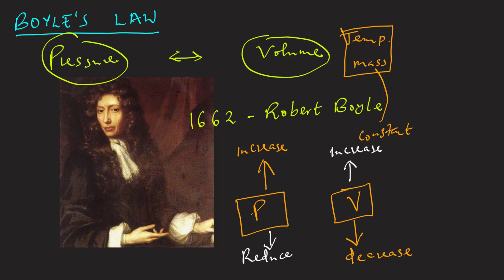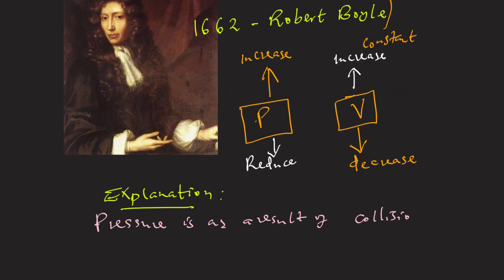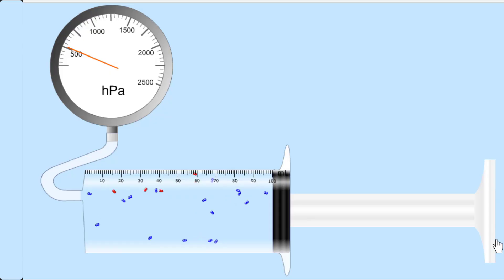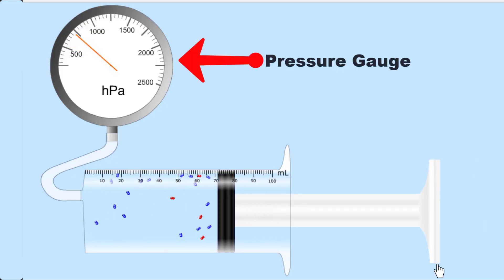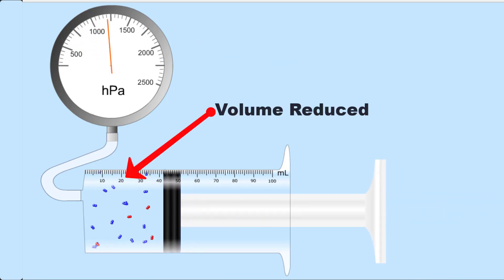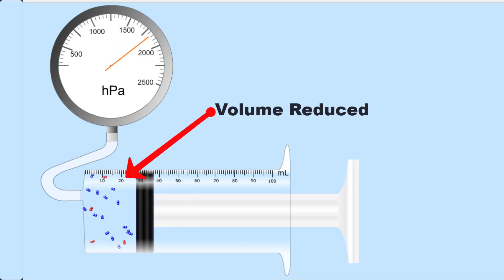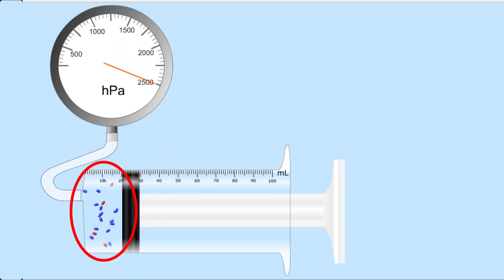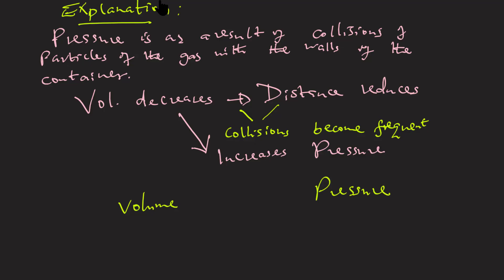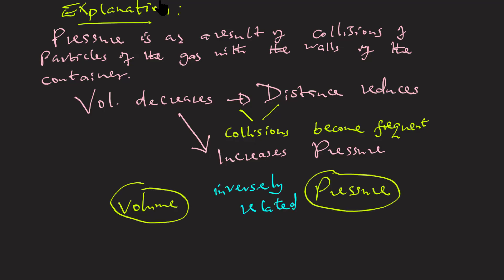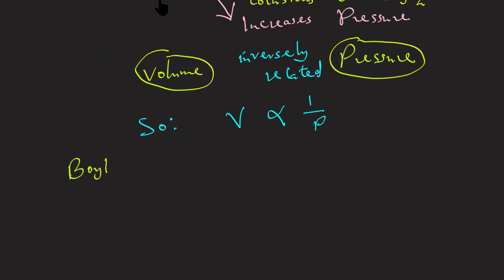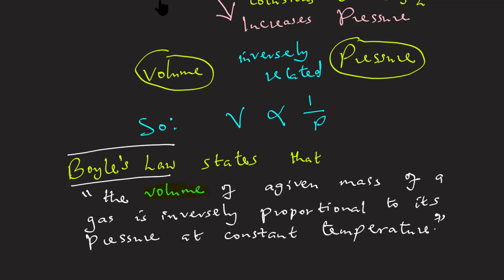How do we explain this observation? The pressure of a gas is the result of collisions of the gas particles with the walls of the container. When the volume is decreased at a constant temperature, the gas molecules will have a shorter distance to cover before colliding with the walls of the container. Therefore, the collisions will become more frequent and the end result is an increase in the pressure. This relationship between pressure and volume gives rise to what we call Boyle's law, which can be stated as follows: the volume of a given mass of a gas is inversely proportional to its pressure at constant temperature.